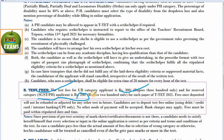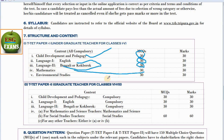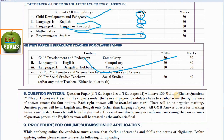Friends, the syllabus includes child development and pedagogy — 30 marks; English — 30 marks; Bengali — 30 marks; mathematics — 30 marks; environment study — 30 marks. Friends, if there is any confusion, do not worry, and watch the video for Paper 2.